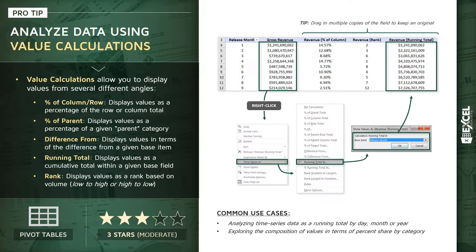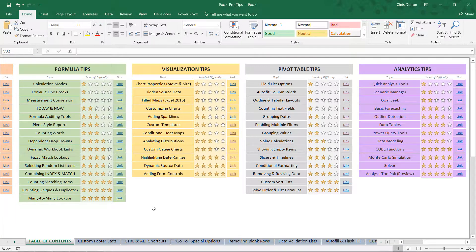Common use cases: one is analyzing time series data as a running total by day, month, or year, or calculating time series trends like month-over-month, year-over-year, quarter-over-quarter, etc. The second common use case is exploring the composition of your values in terms of percent share by things like category, month, year, etc. We're going to jump into Excel and look at some Olympic medal data and practice analyzing and exploring that data using these types of value calculations.